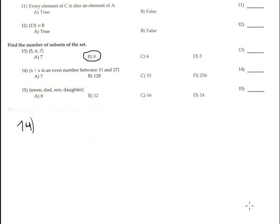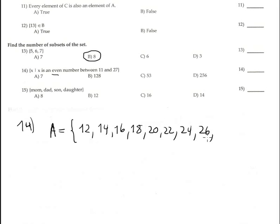Number 14 is the set, let me call it capital A, formed by the even numbers between 11 and 27. The even numbers between 11 and 27 are 12, 14, 16, 18, 20, 22, 24, 26. The next, 28, is bigger than 27, so it stops here. We have 8 elements, so the formula is 2 to the 8th power is 256 subsets we have in total.